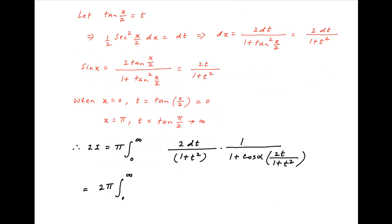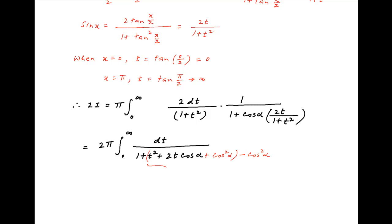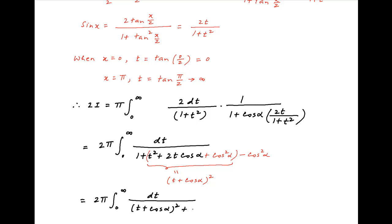The right-hand side simplifies to 2π times the integral from 0 to ∞ of dt over (1 + 2t cos α + t²). In the denominator we add and subtract cos²α to complete the square: t² + 2t cos α + cos²α = (t + cos α)². Therefore 2i = 2π times the integral from 0 to ∞ of dt over ((t + cos α)² + 1 − cos²α), which equals 2π times the integral from 0 to ∞ of dt over ((t + cos α)² + sin²α).